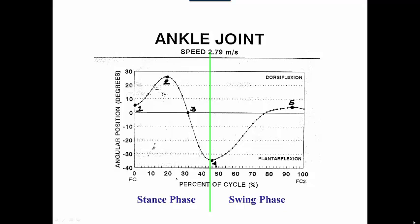Let's look at the ankle joint. We have running at a speed of 2.79 meters per second. This is the position graph, so we have position in degrees on the y-axis, and we have percent of cycle from foot contact to the following foot contact on the x-axis.